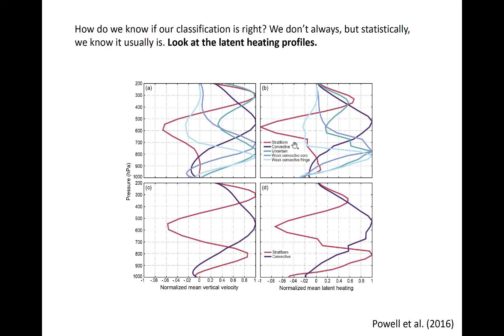The top and bottom rows show the results of mean vertical velocity and latent heating profiles using two different algorithms, this is one and this is one, and shows that the separate classification of shallow convection is important.